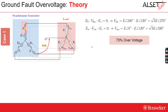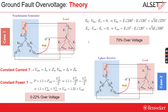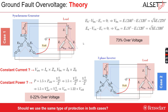However, for inverter-based sources, the situation is different. Since inverter-based sources are sometimes modeled as mostly constant current sources, they should not show any sign of ground-fold overvoltage. Even when we model the inverter-based sources as constant power sources, the ground-fold overvoltage should not exceed 22% theoretically. This gives rise to the question: should we use the same type of protection for both cases?